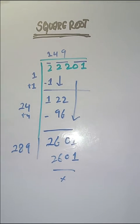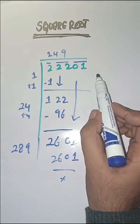So the problem is solved. Square root of 22201 is 149.